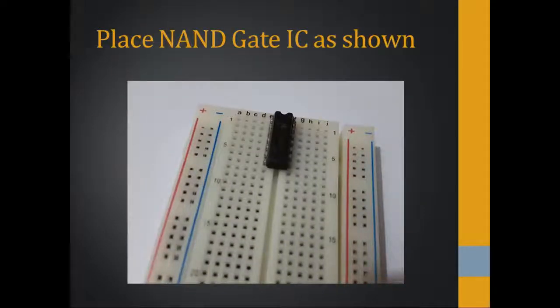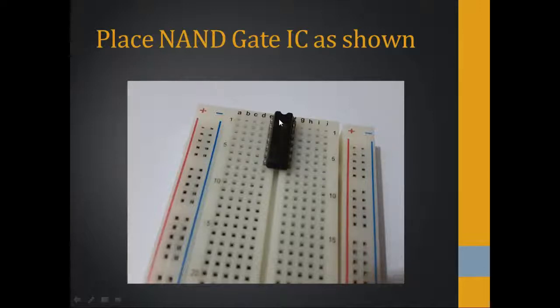Now starting — place the NAND gate IC as shown, placing it accordingly in the E and F columns of the breadboard. Just see, it is being placed accordingly. There is a notch cut on the IC and it should be placed with that orientation, just like this.